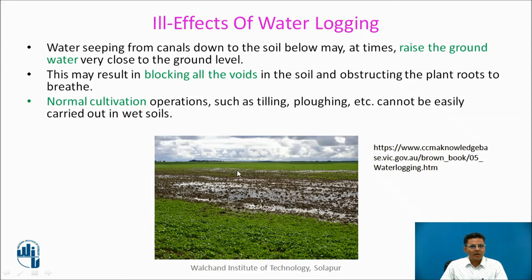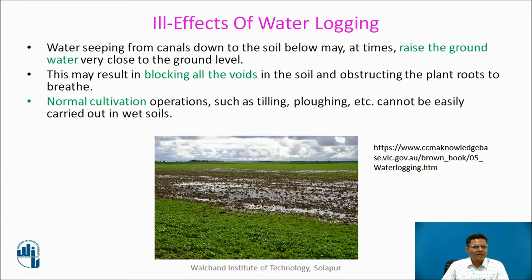Unlined canals lead to water logging. Water logging raises the ground water table, bringing it very close to ground level. It blocks all the voids in the soil, so plant roots cannot breathe or take the oxygen required for survival of bacteria. Normal cultivation operations like tilling and plowing also cannot be performed properly.